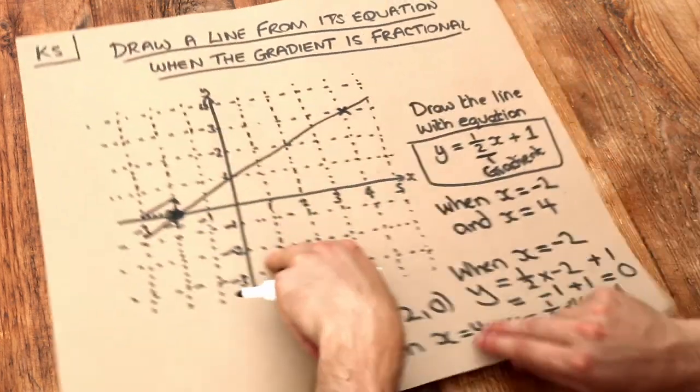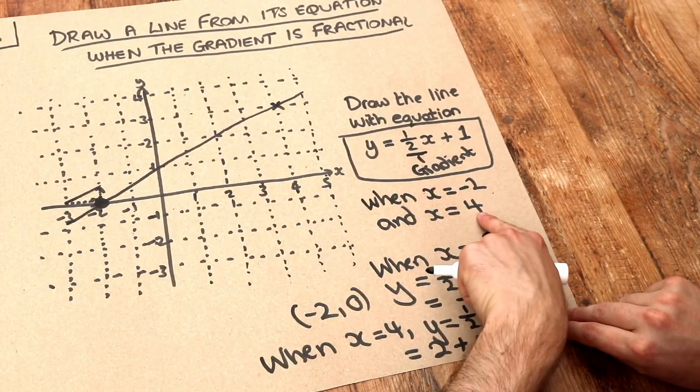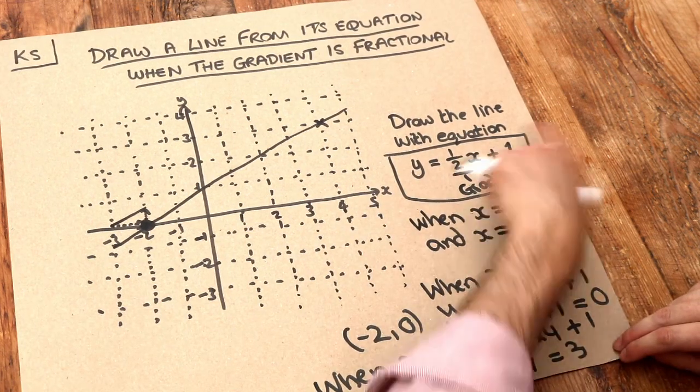Although the question does say it just wants it between minus 2 and 4, technically speaking, this line could go on forever.